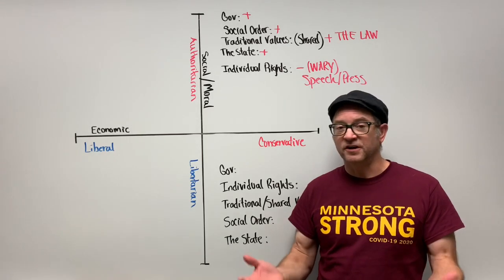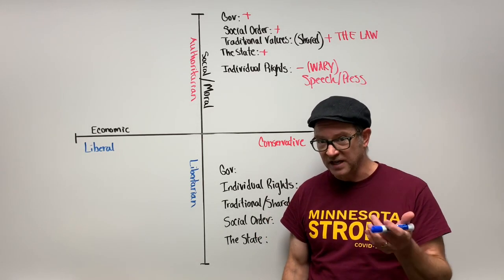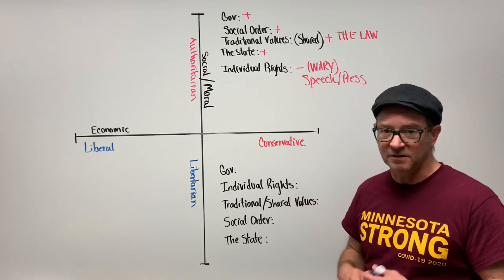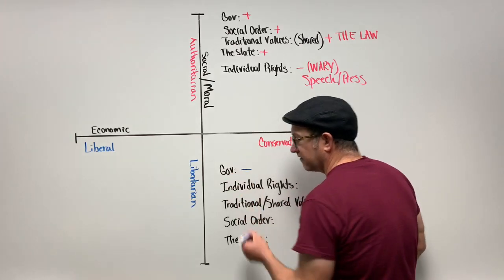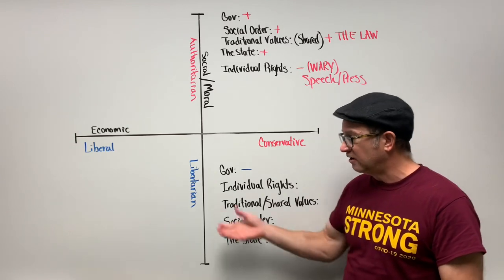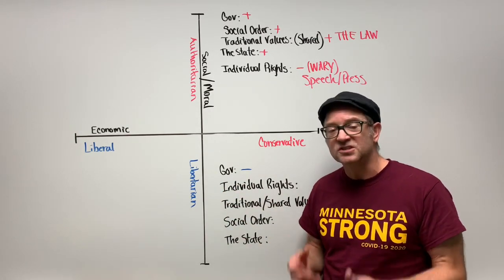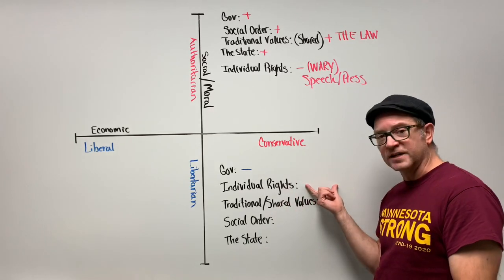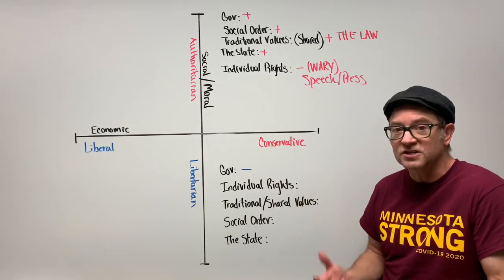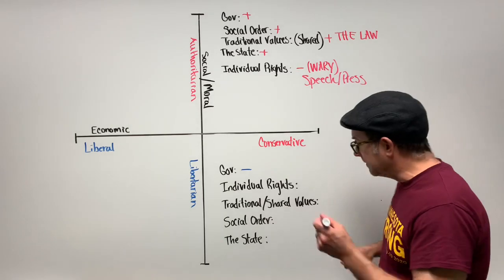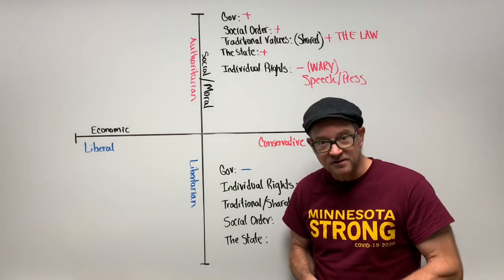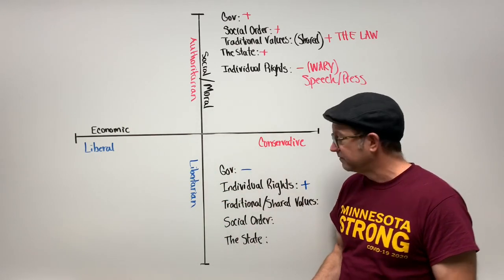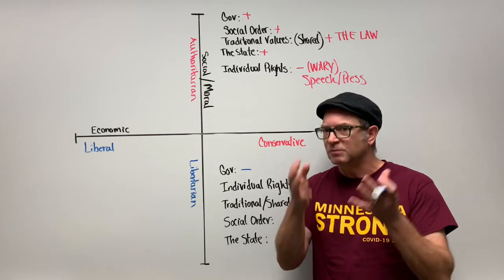Now let's make the libertarian ideology visual. On government involvement in your social/moral life, libertarians think negatively about it — government should, as much as possible, stay out of your social/moral life. People should have the freedom to decide for themselves what is morally and socially correct. As a result, libertarians feel very positively about individual rights and liberties — the more rights the better. With less government, people have more freedom, and individuals should retain as much freedom as they possibly can.